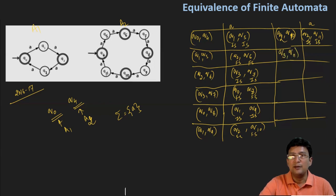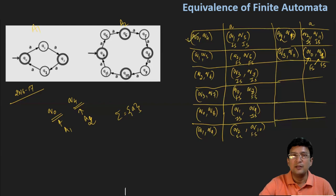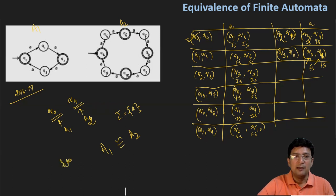Q3 and Q11, by taking symbol A: Q3 moves to Q0 and Q11 moves to Q4. Q0 and Q4 are both final states in their respective automata. Q0 and Q4 is not a new pair — it is the pair we started with — so our computations are complete. Therefore, automata A1 and automata A2 are equivalent and they accept the same language.